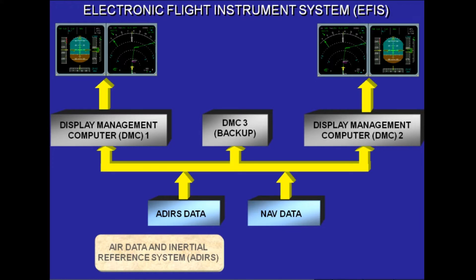The DMCs then process the data and generate the images to be displayed. Under normal circumstances, DMC 1 supplies the captain's EFIS displays, DMC 2 supplies the first officer's EFIS displays, and DMC 3 is available as a backup.